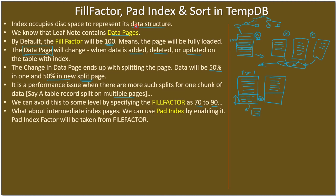We have been talking about data pages and leaf-level nodes. What about intermediate index pages? We can use the pad index option — by enabling it, it will take the percentage of reserved space from the fill factor value. If you specify fill factor as 70 percent, then pad index will use that fill factor number for intermediate pages.